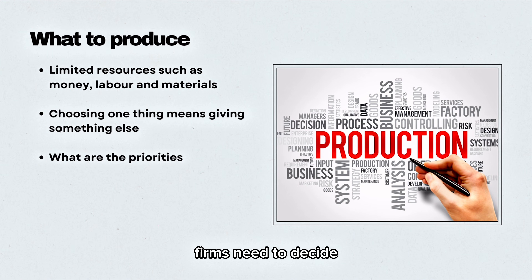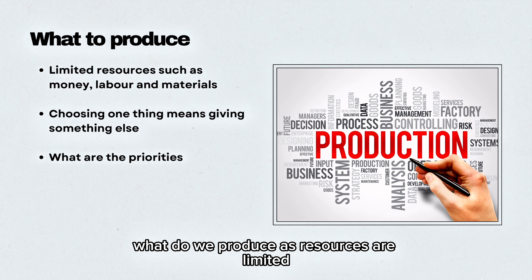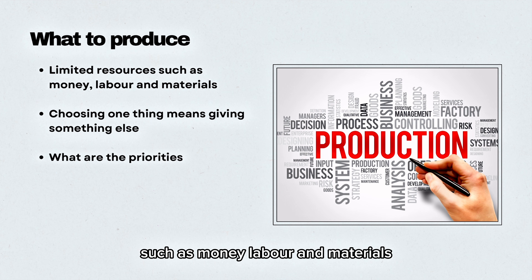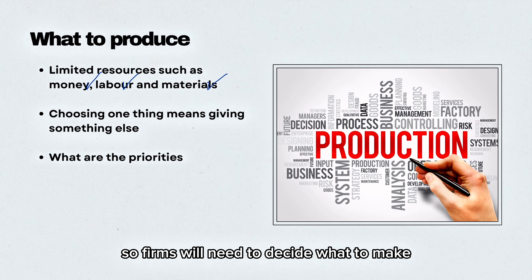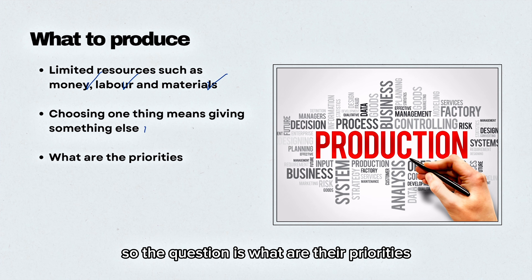Firms need to decide on allocating their scarce resources by asking the following three questions. First, what do we produce? As resources are limited such as money, labour, and materials, firms will need to decide what to make, as choosing one thing means giving up something else. So the question is, what are their priorities?